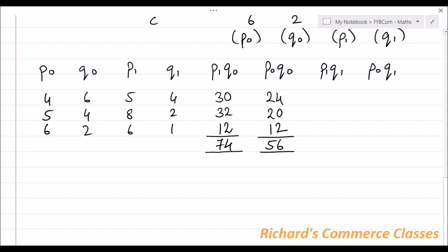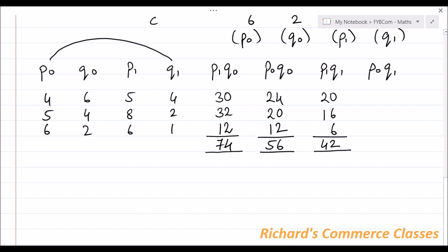Next we need P1Q1, so multiplying the P1 and Q1 columns: 5×4 = 20, 8×2 = 16, and 6×1 = 6, giving a total of 42. And finally P0Q1, multiplying the P0 and Q1 columns: 4×4 = 16, 5×2 = 10, and 6×1 = 6, giving a total of 32.